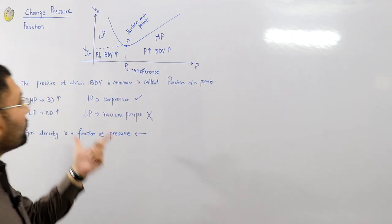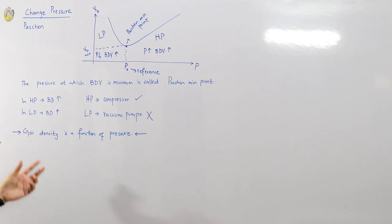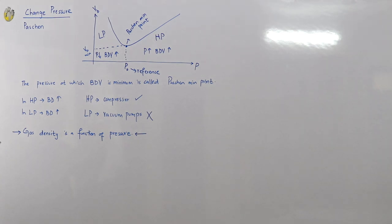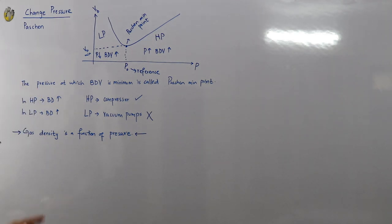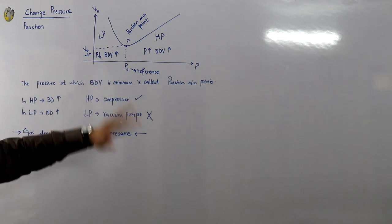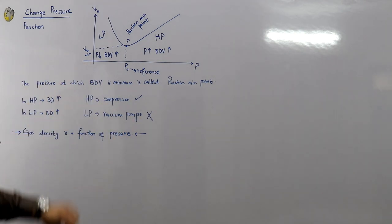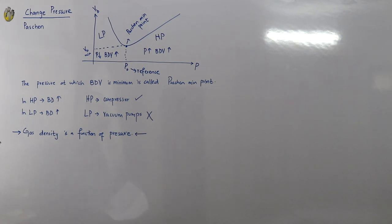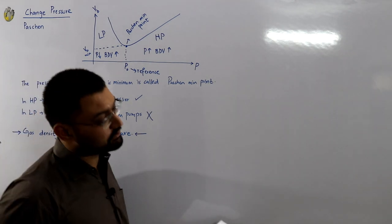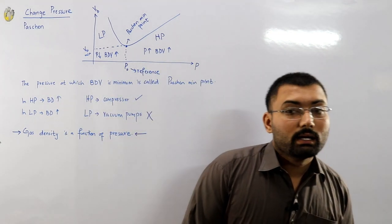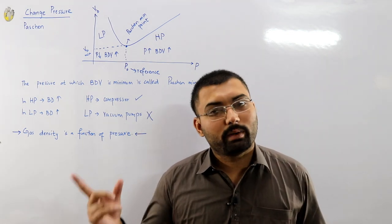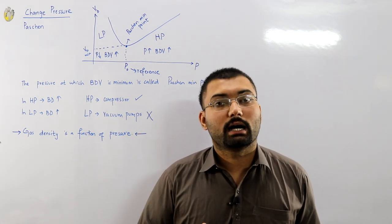So by playing around with the pressure of the gas we have come to know that we can reduce the chances of ionization, and hence the current, and hence the breakdown — either by going to the high pressure region or the low pressure region. Similar is the case of the circuit breaker we are discussing: when the contacts of the circuit breaker open, the air gets ionized and there is an arc.